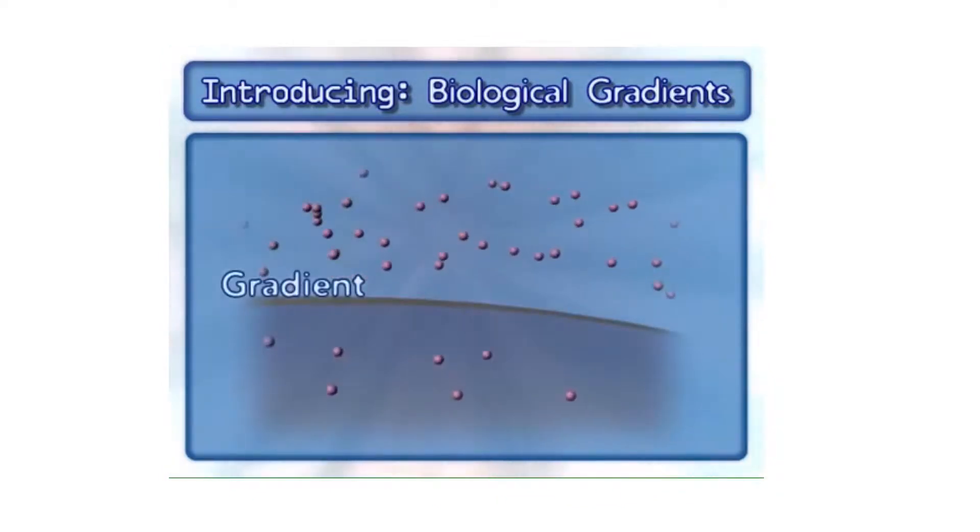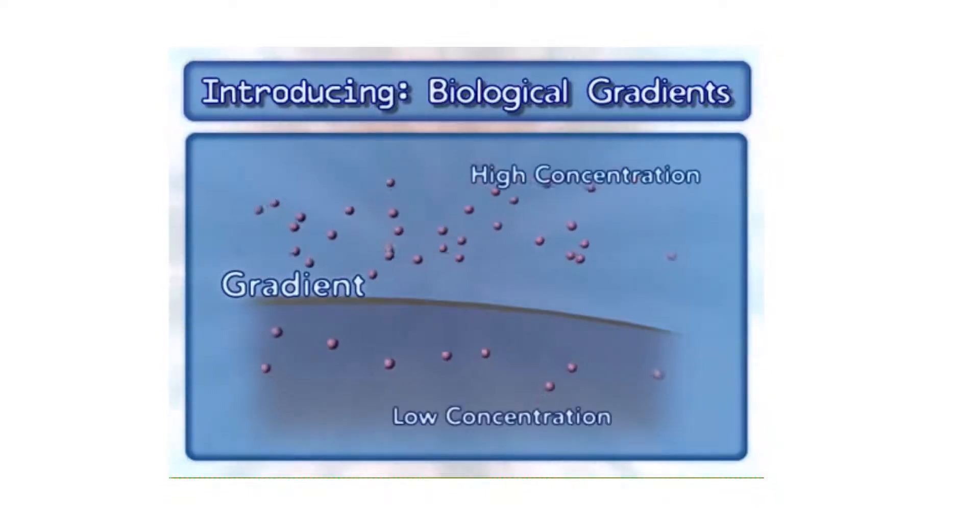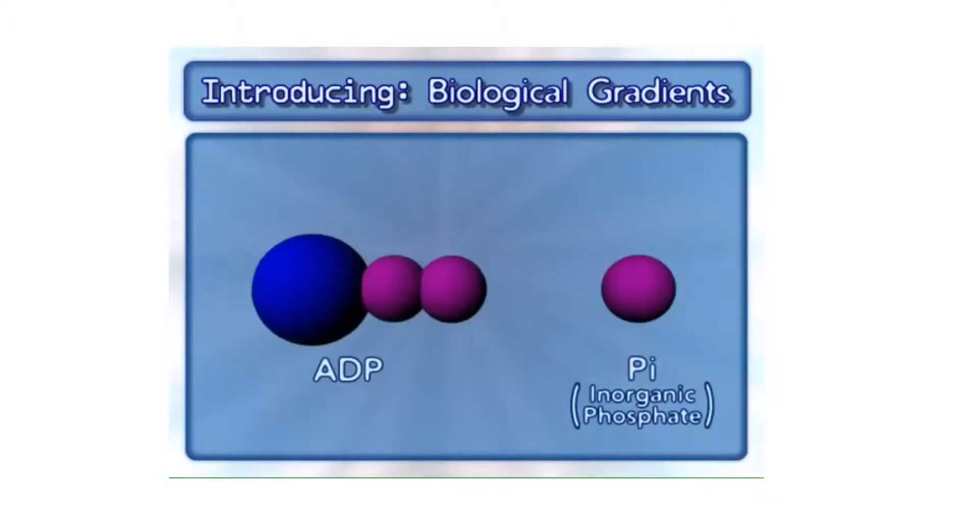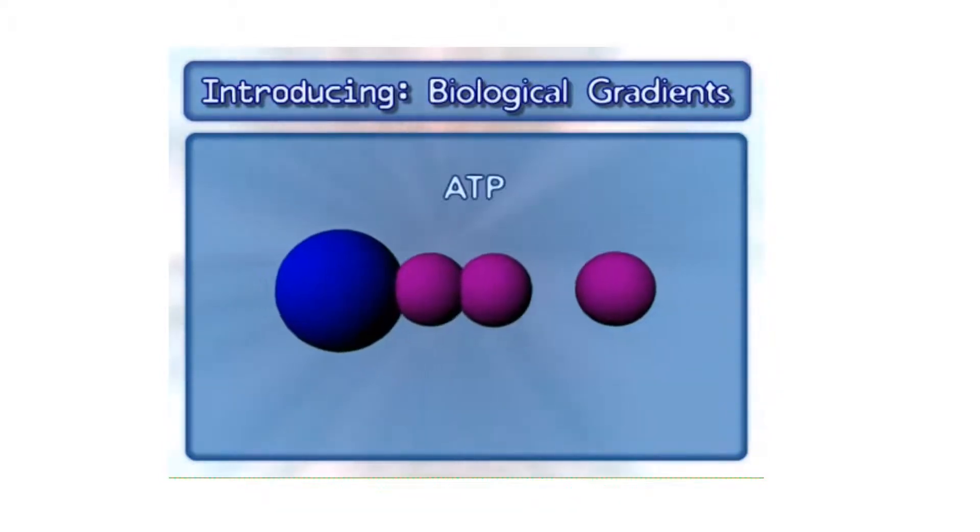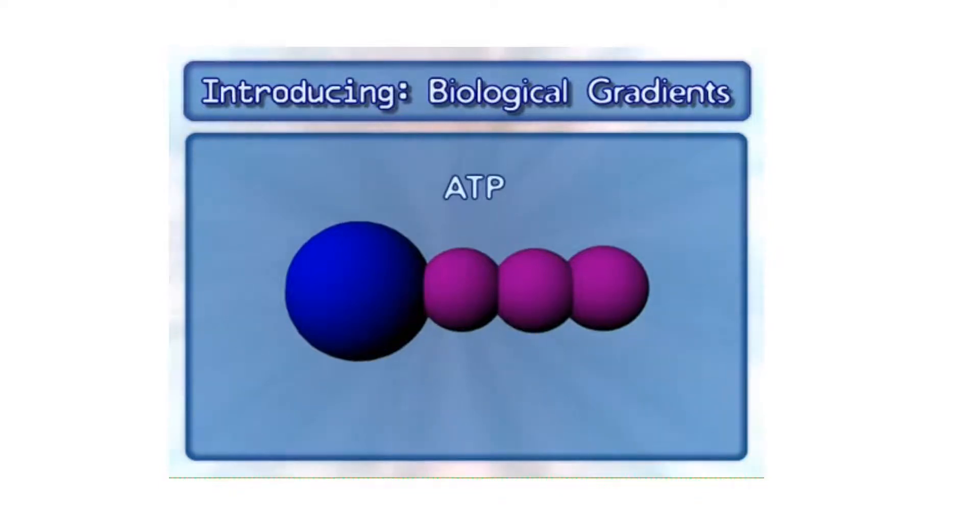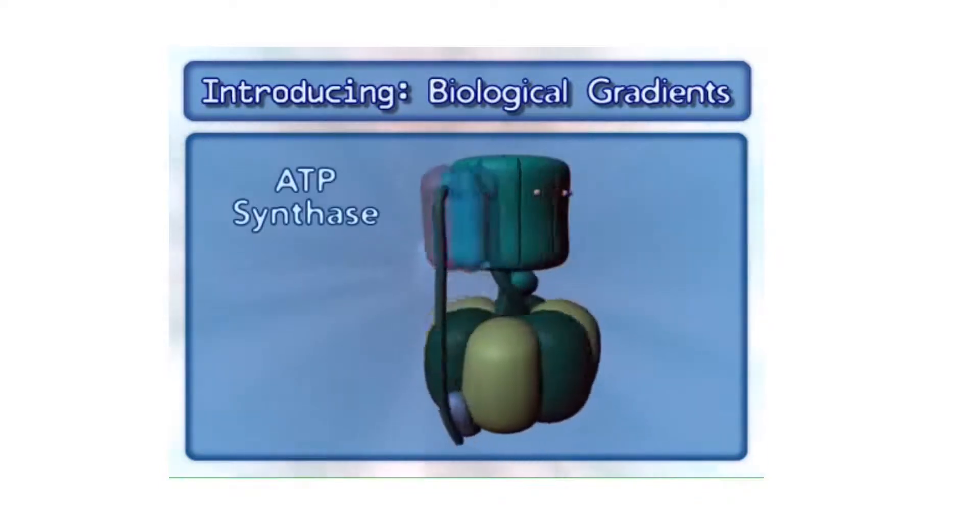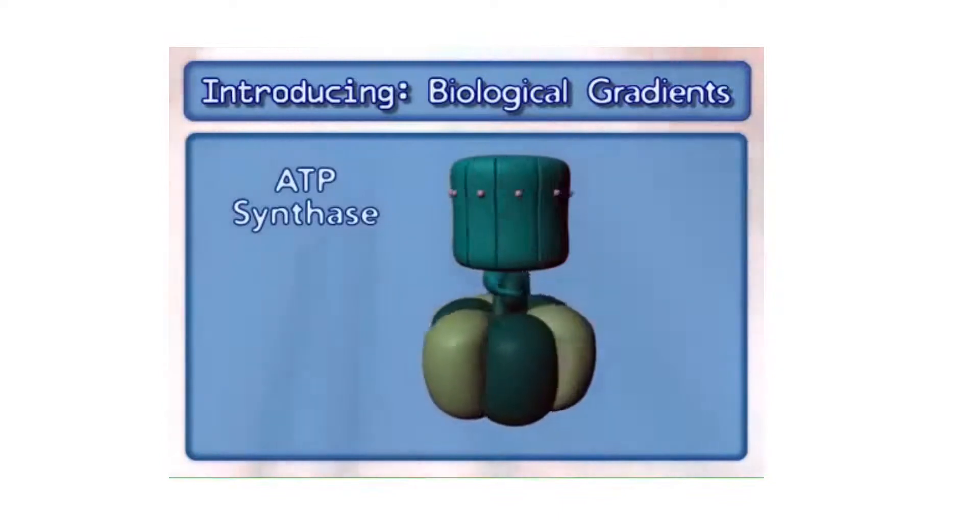A gradient exists when there is a higher concentration of a molecule in one compartment compared to a neighboring compartment. This animation will demonstrate how the potential energy that results from a hydrogen ion gradient uses ADP and inorganic phosphate, also known as Pi, to synthesize ATP. This process involves an enzyme complex called ATP synthase.